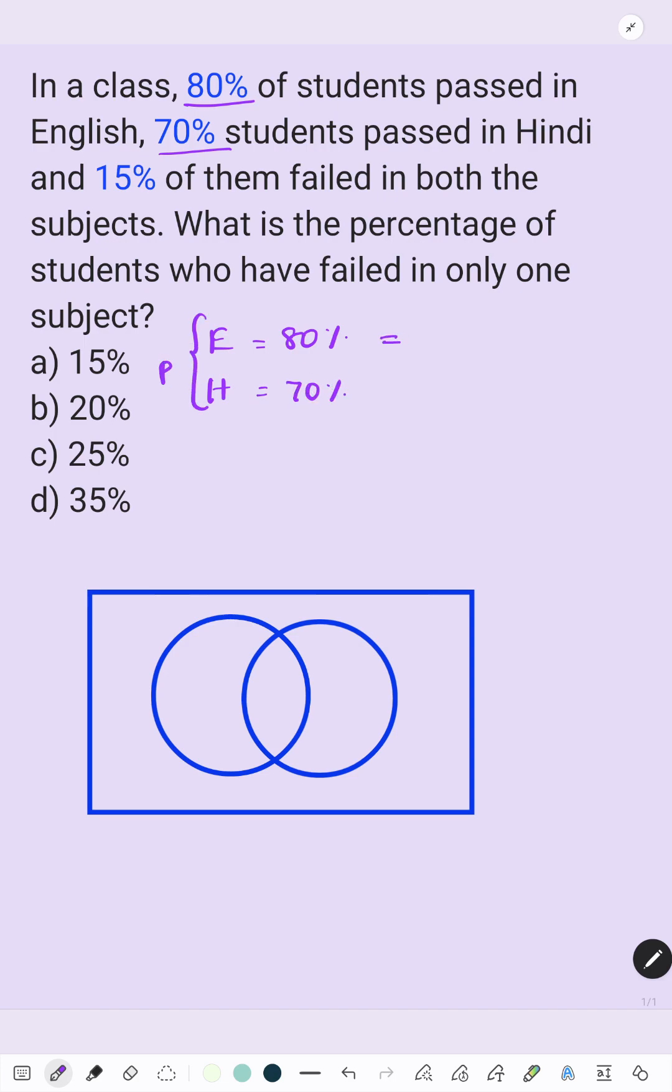Likewise, fail percentage equals 100 minus 80 equals 20. Likewise, 100 minus 70 equals 30. This is fail percentage.